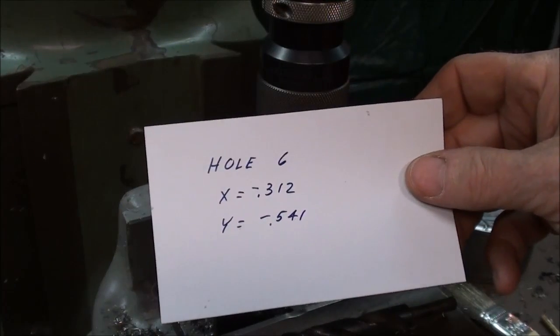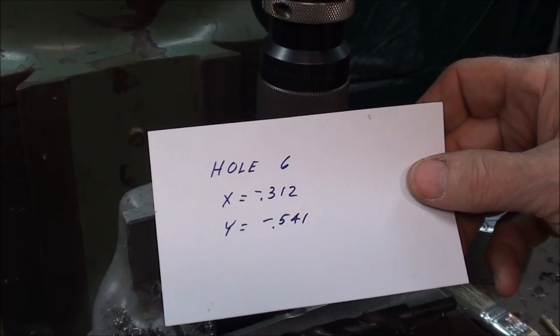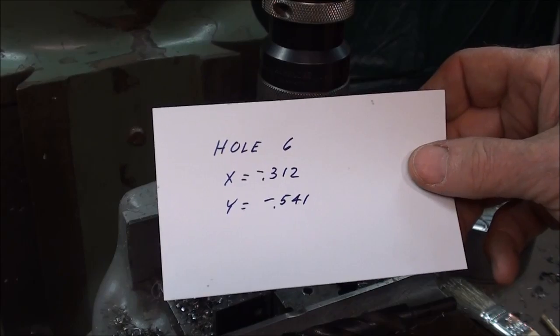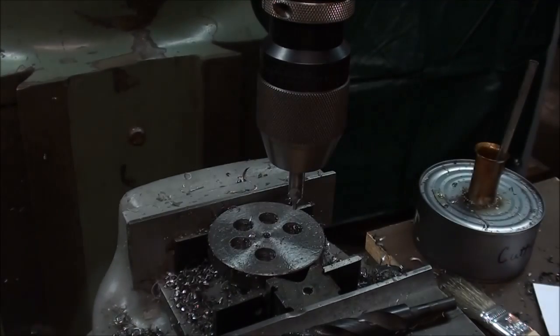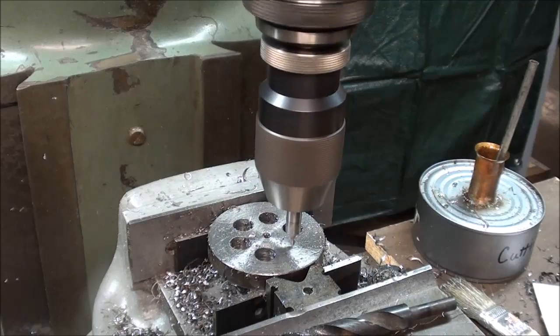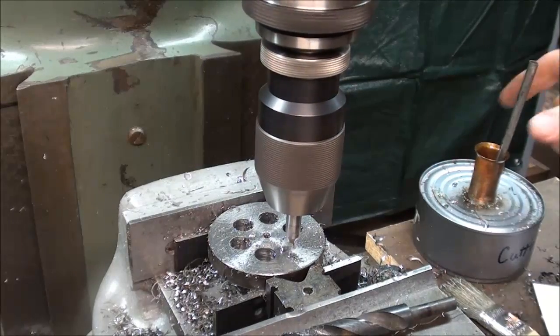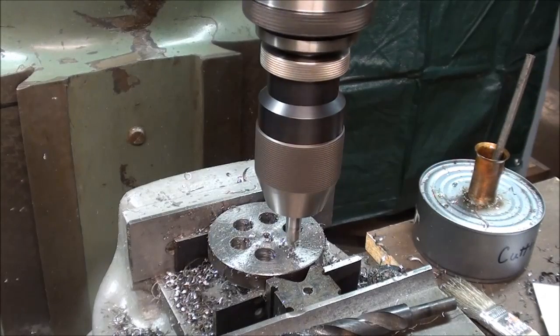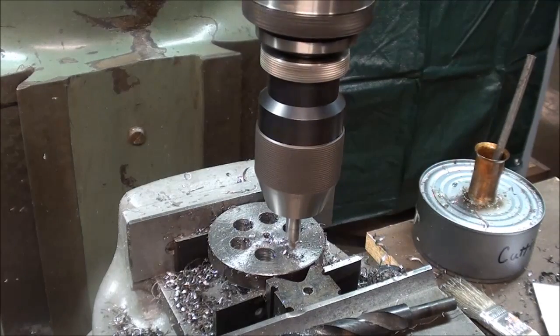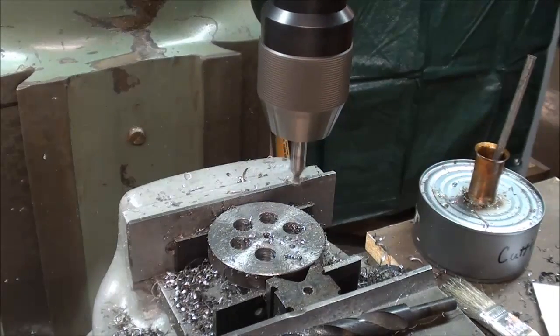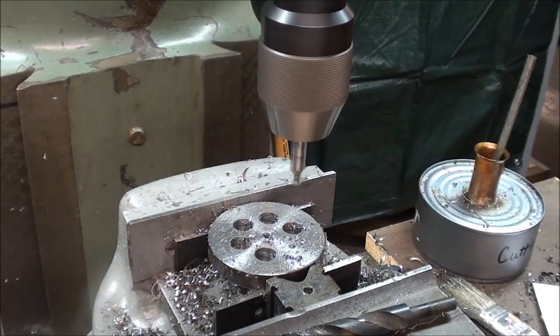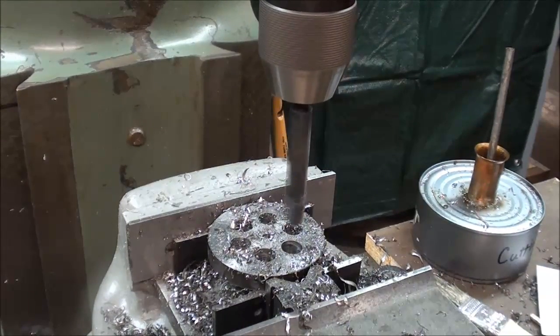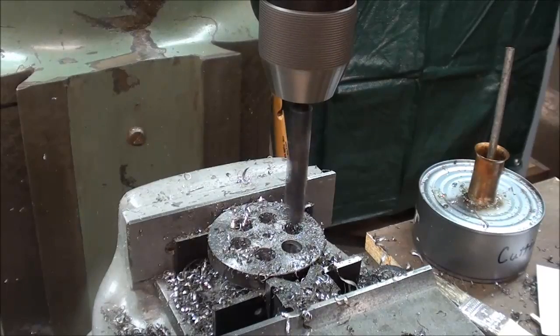Now we're going to drill hole 6 and that's X equals minus 0.312 and Y equals minus 0.541. And this is the last hole and that's it for hole 6.